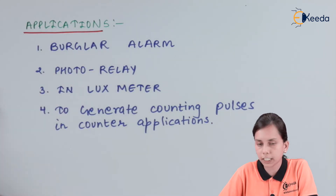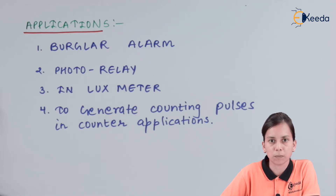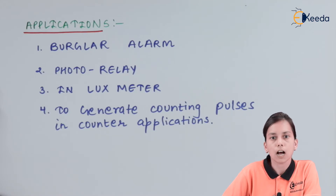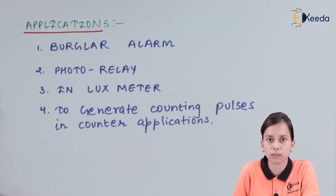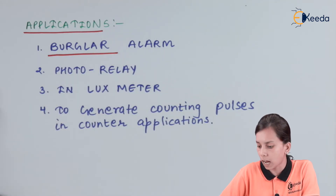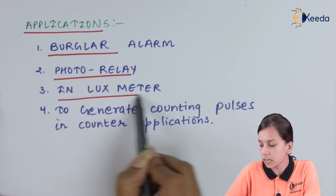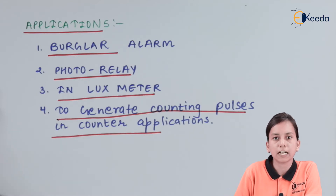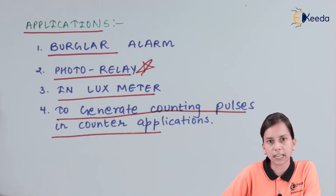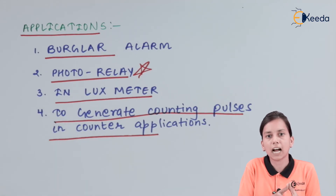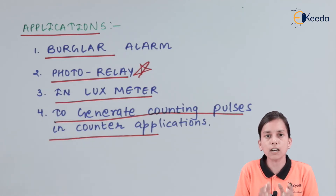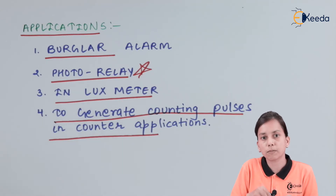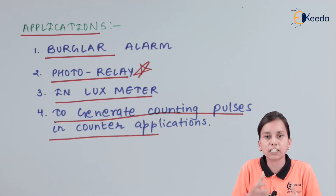Let us talk about the applications of the photoconductive cell. As they are highly sensitive transducers — because they consist of photosensitive material — this material will change its property just on the basis of the presence of light. Their applications include burglar alarms, photorelay, lux meter, and generating counting pulses in counter applications. Whenever we are trying to design a circuit which can count pulses, we are always interested in using this LDR. We will discuss the photorelay to understand how we can actually use LDR in a particular type of application.